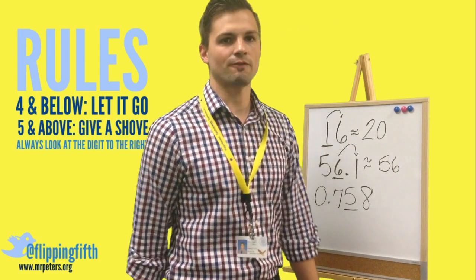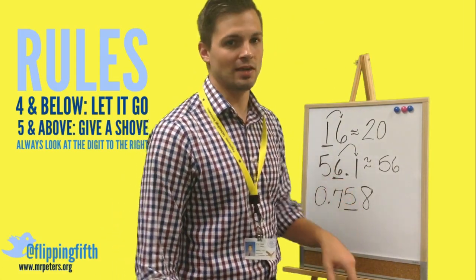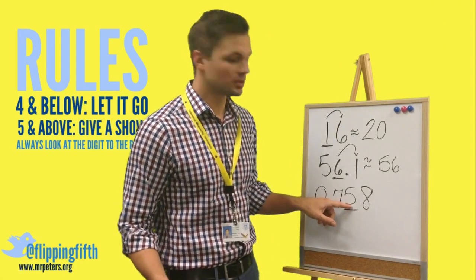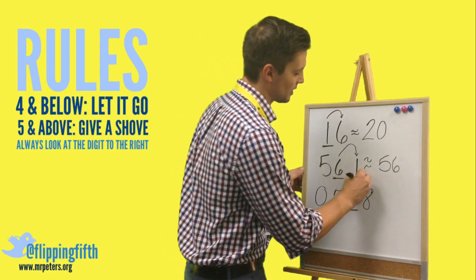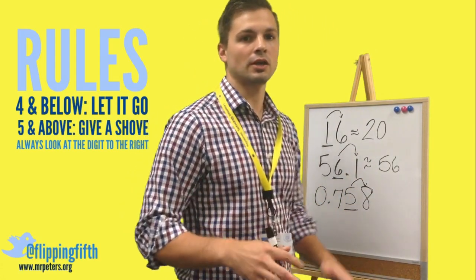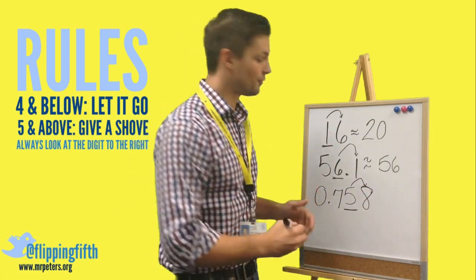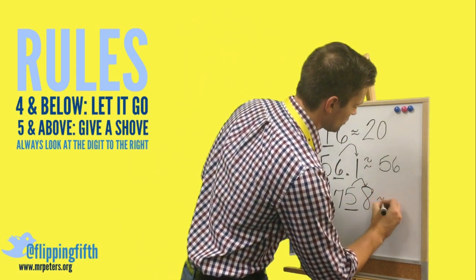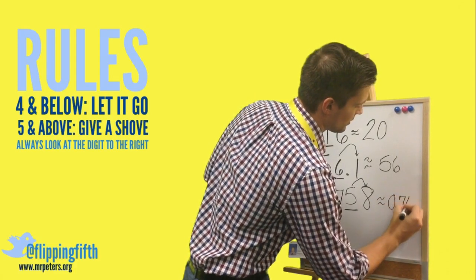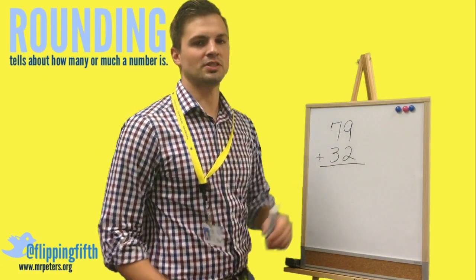Finally, when we look at a number like 758 thousandths, we're looking for the digit in the hundredths position — that five. We look directly to the right of it. Eight is definitely above five, so five and above you give a shove. We round up, making it 76 hundredths.